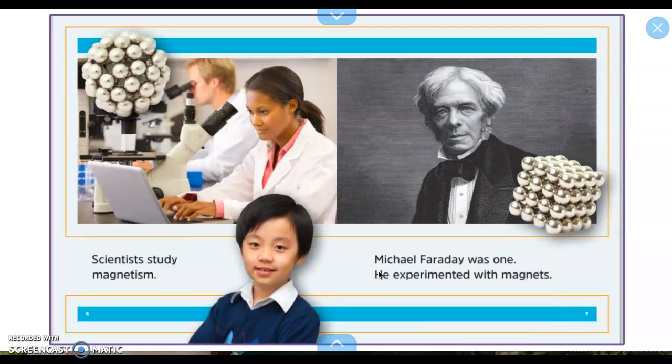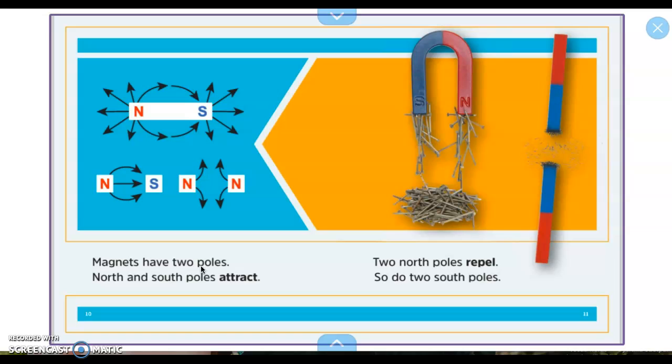Scientists study magnetism. Michael Faraday was one. He experimented with magnets. Magnets have two poles. North and south poles attract. So this is what we were talking about before. So here are the north poles, and here are the south pole. So these attract each other. So the north and the south, they kind of connect. But if you put two magnets that are the same toward each other, they will not.